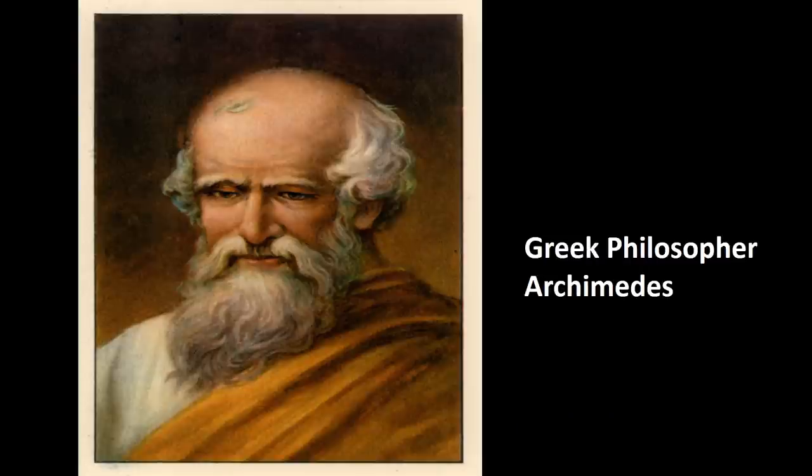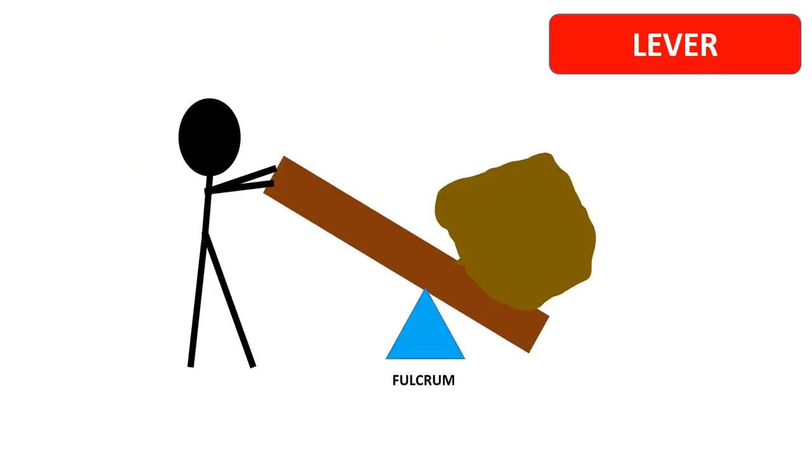Simple machines were first discovered and described by Greek philosopher Archimedes. Lever: The lever is made up of a straight rigid object, like a board or a bar, which pivots on a turning point called a fulcrum.